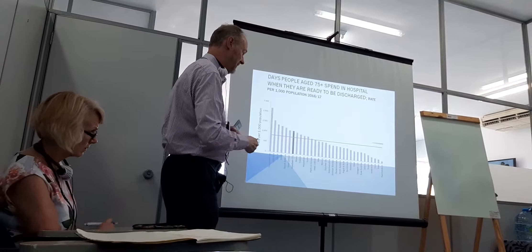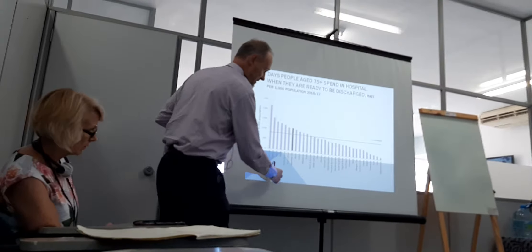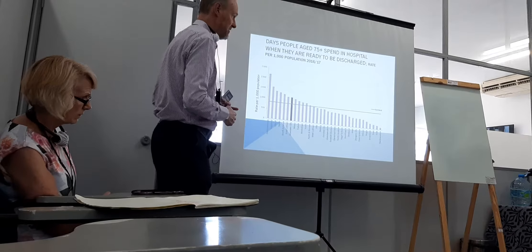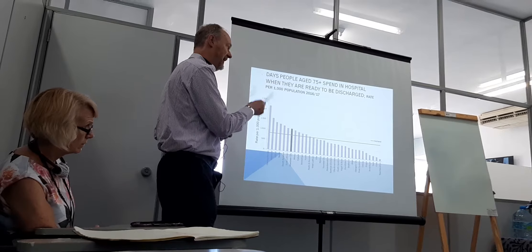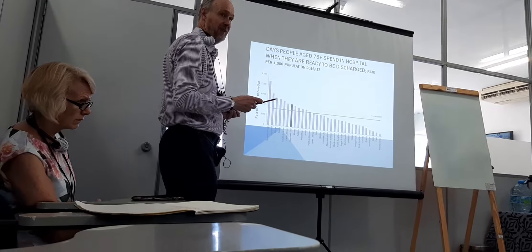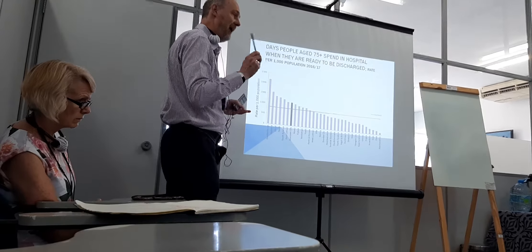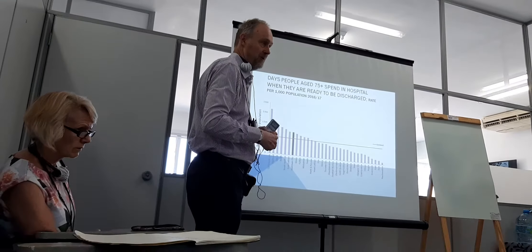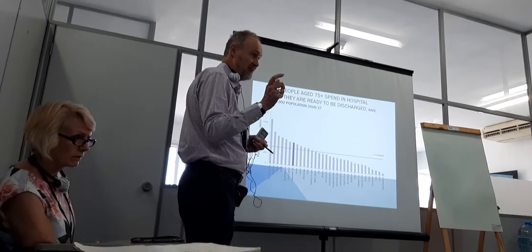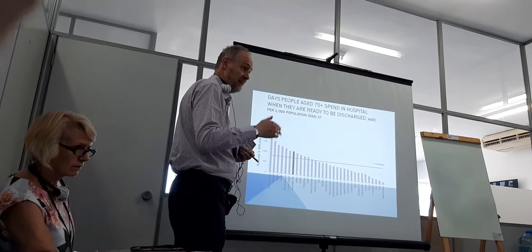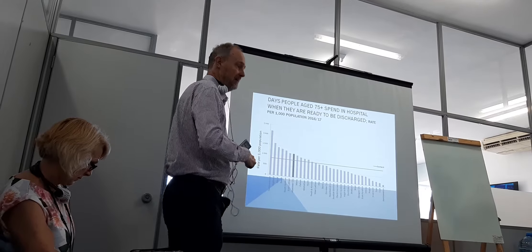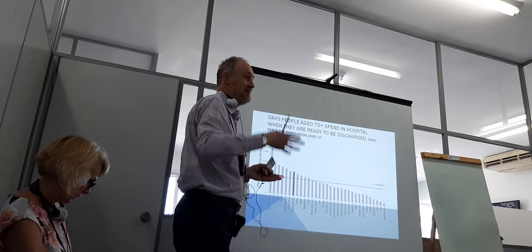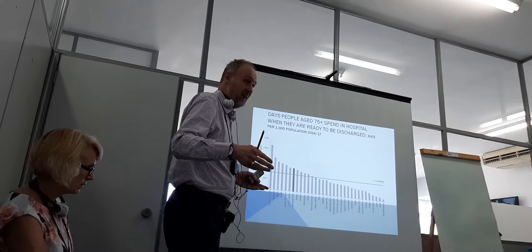This is another example of a benchmark. These are the same geographical areas for the authorities in Scotland. And these are the number of days that people aged over 75 spend in hospital after they have been declared ready to be discharged. So after the doctor has said this person can go home, this is the variation in the delay that occurs before the person actually gets home.